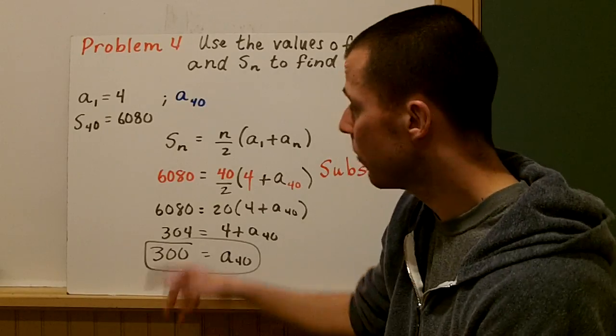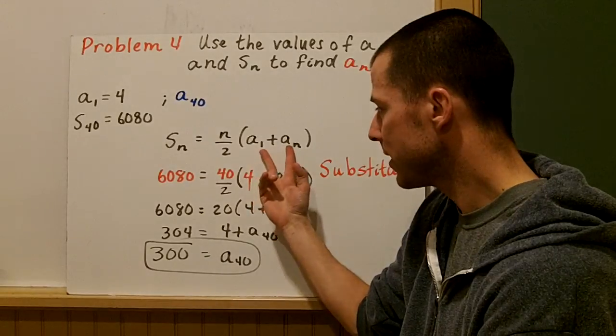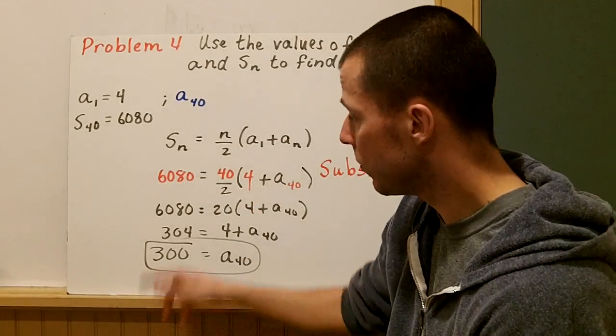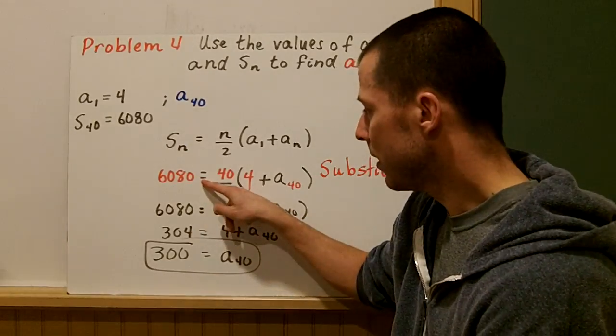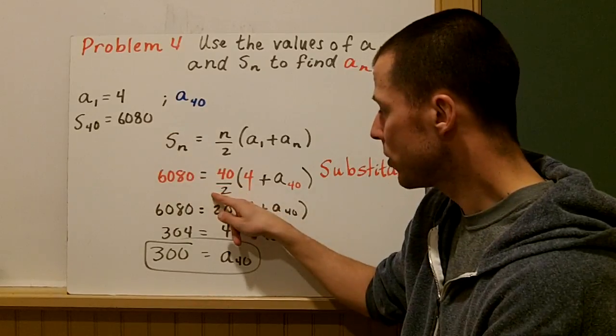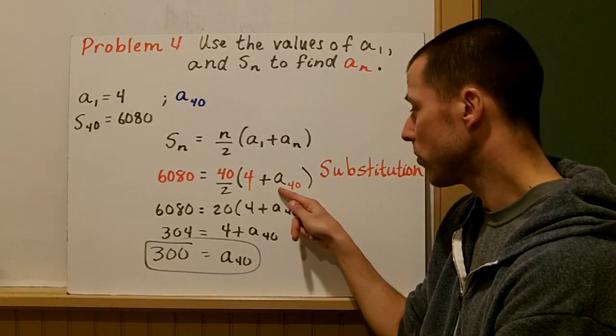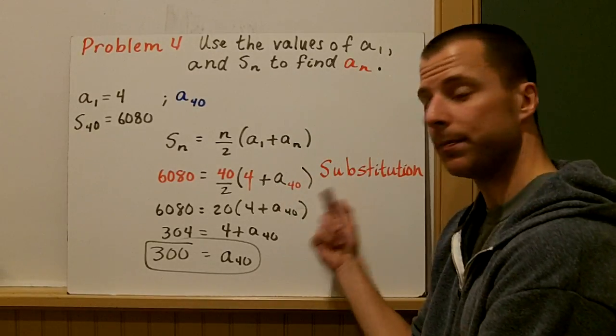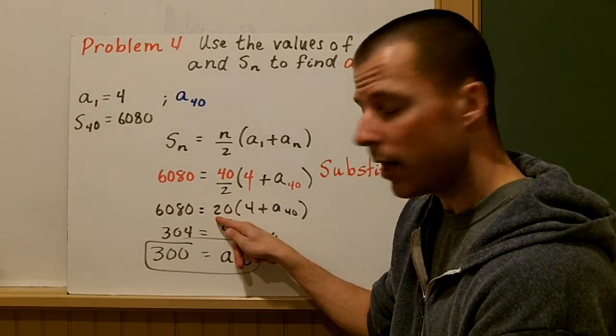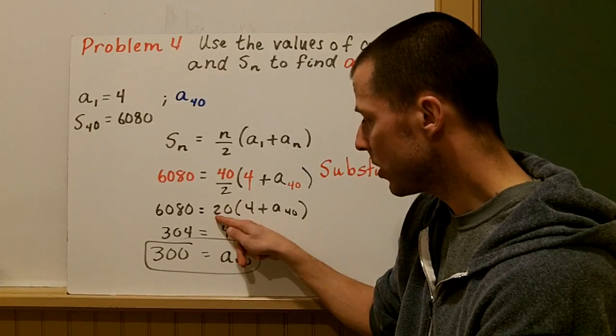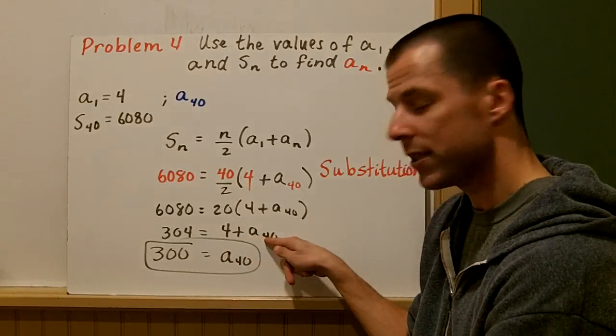Let's use our equation. S_n equals n over 2 times the quantity a_1 plus a_n. Let's substitute. S_n is 6080. That's equal to n, n is 40 over 2 plus the first term plus your last term. a_n in this case is 40. So we're looking for a_40. Simplifying 40 over 2, using our order of operations, I get 20 and I divide each side by 20. I get 304 is equal to 4 plus a_40.